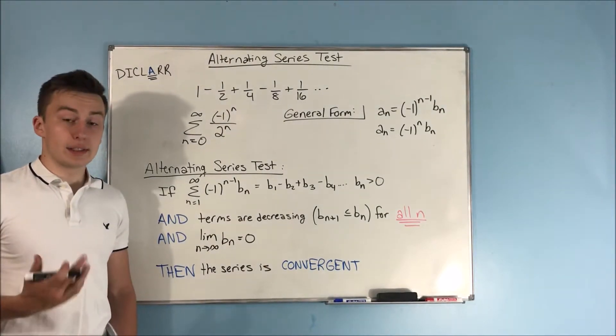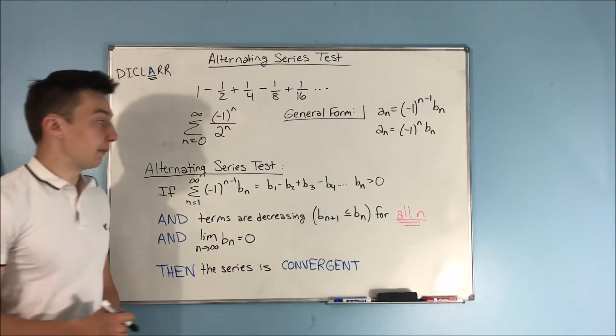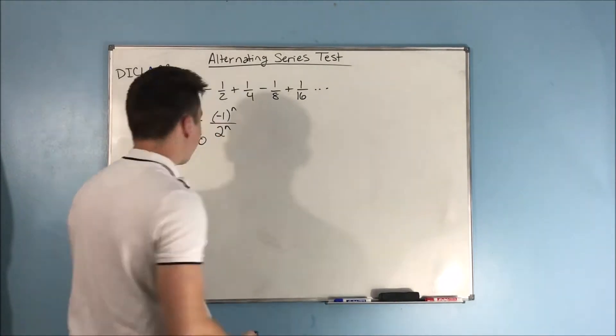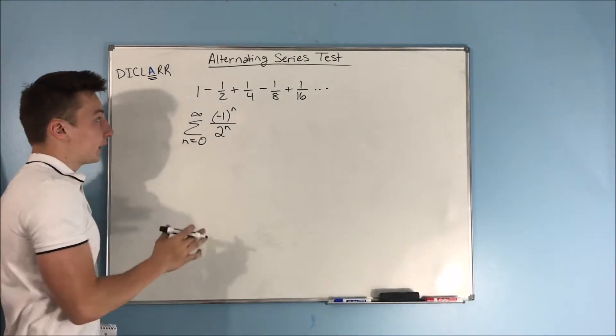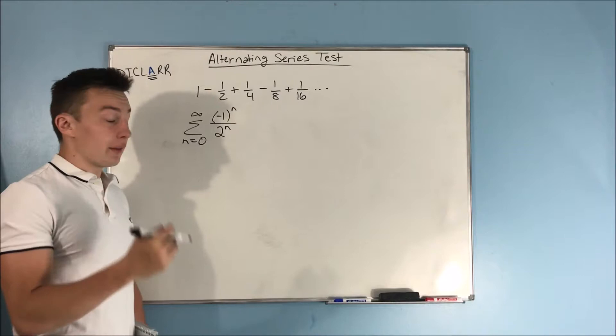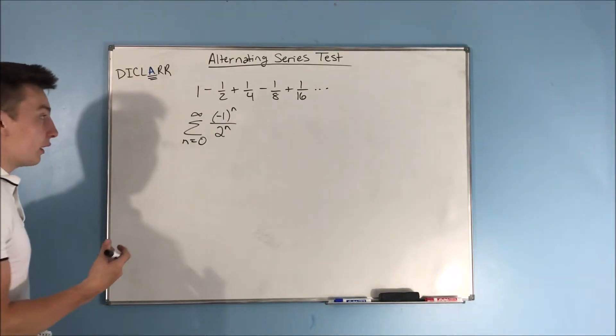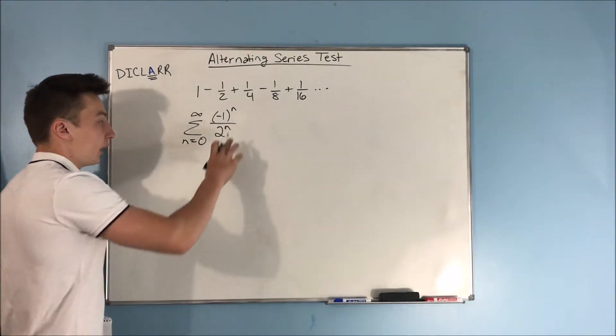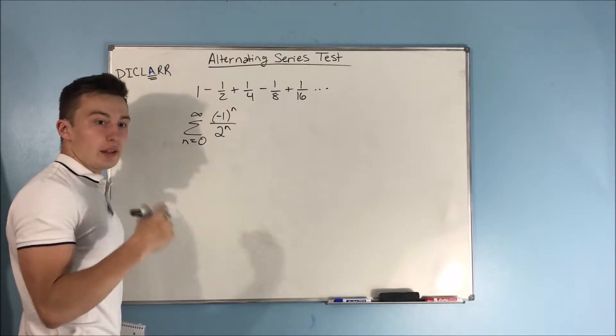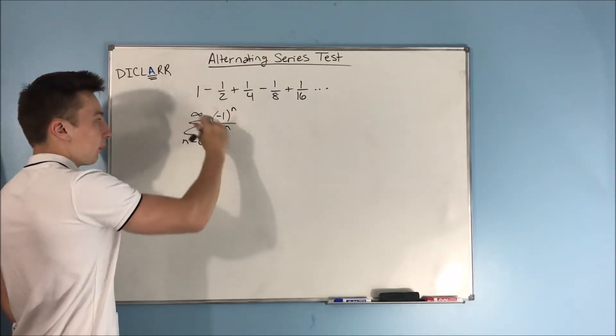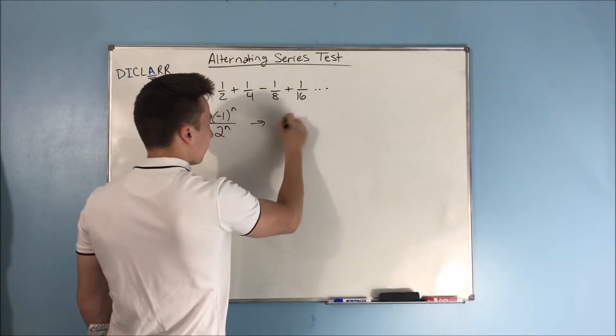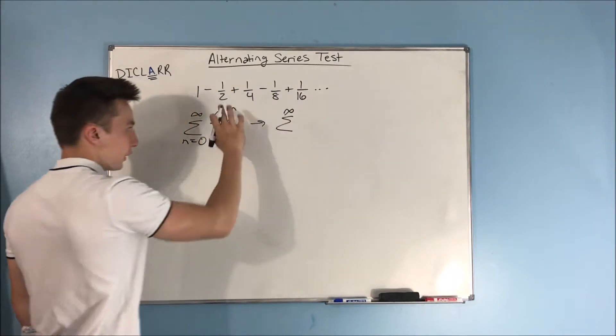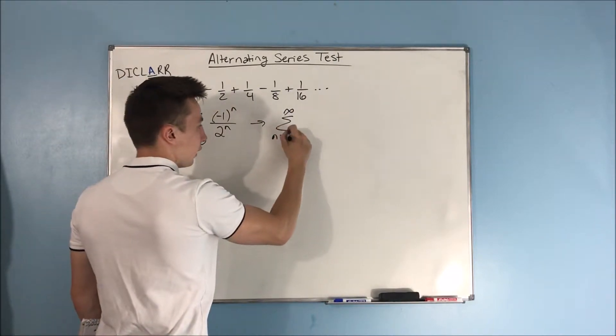And that's what the alternating series test is saying. So, let's do a quick example. So, let's try to see if this series right here is convergent by the alternating series test. The first thing that we need to do, it might be a little easier for you to see what your b sub n is if we kind of break this apart.